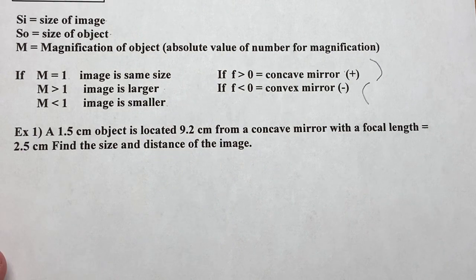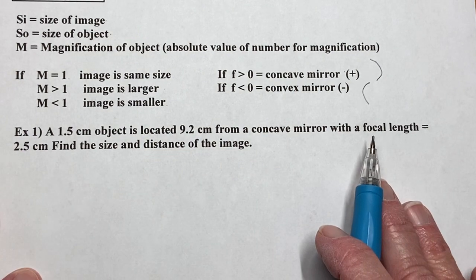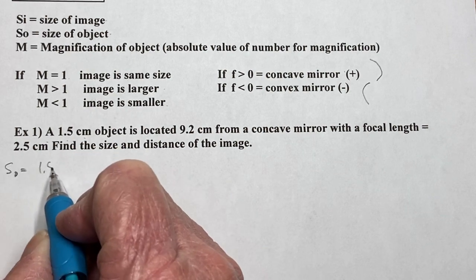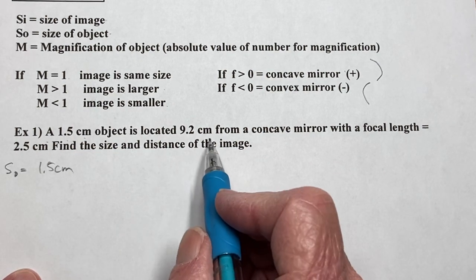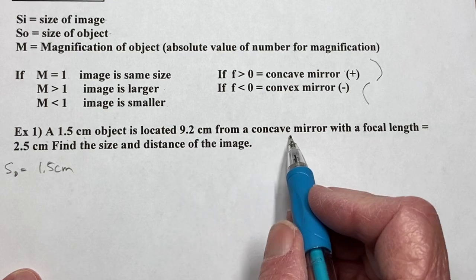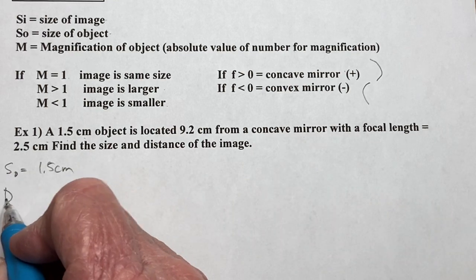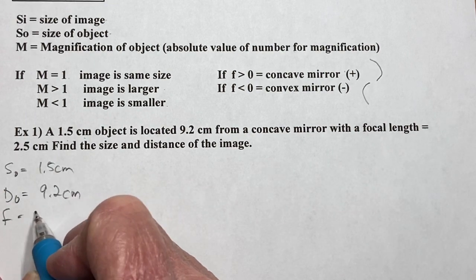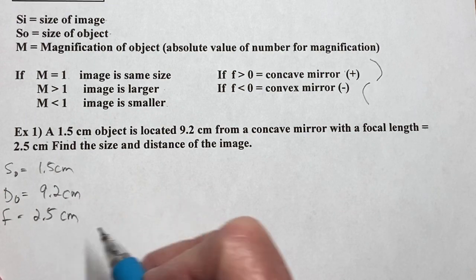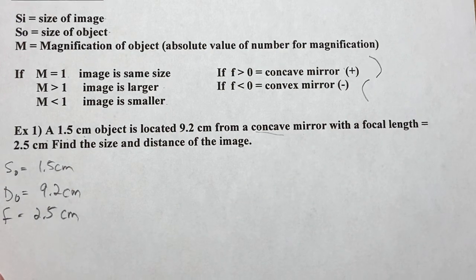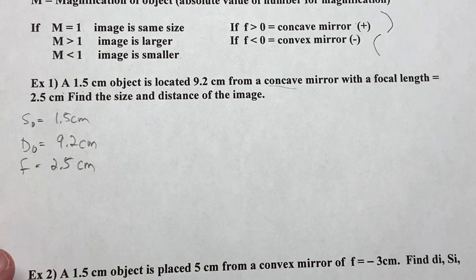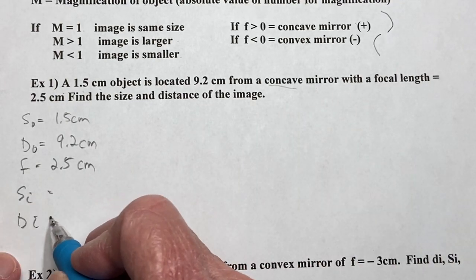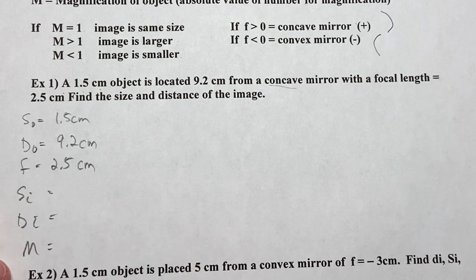So let's start with this first one. As we read it, let's make sure we understand everything. A 1.5 centimeter object, that is the size of the object, is located 9.2 centimeters from a concave mirror. So that is the distance of the object, 9.2 centimeters. Focal length, 2.5 centimeters. It's concave because sometimes they don't give me the sides and I may have to put them in. I want to find the size of the image, the distance of the image, and I'm going to add in magnification.